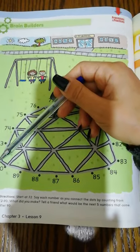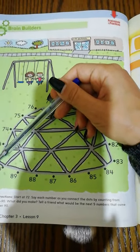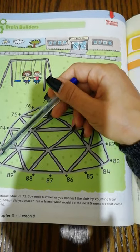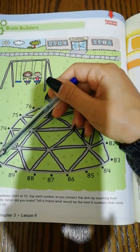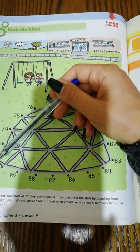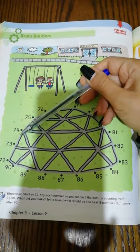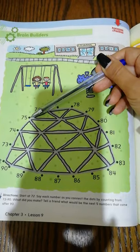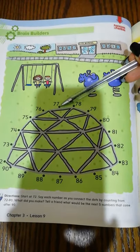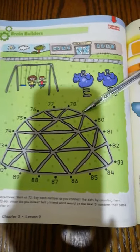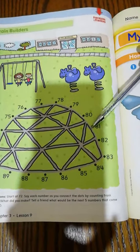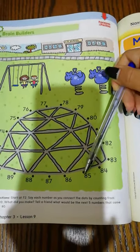Say each number as you connect the dots by counting from 72 to 90. What did you make? So from 72, we start 73, 74, 75, 76, 77. You have to say all the numbers as you connect the dots together.